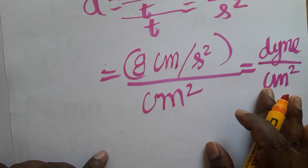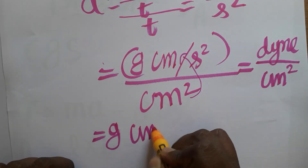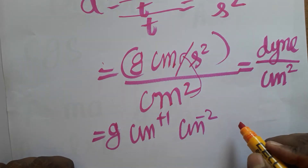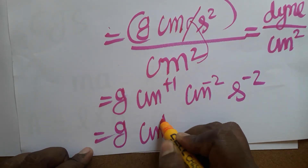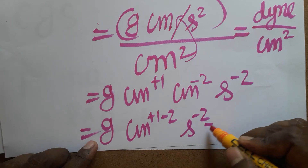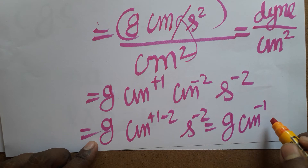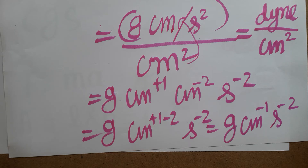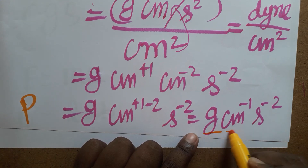From the denominator, we can bring centimeter to the numerator. So we get gram times centimeter to the power (1 minus 2), which becomes centimeter to the minus 1, and second to the minus 2. Therefore, the unit of pressure in the CGS system is gram centimeter to the minus 1 second to the minus 2.